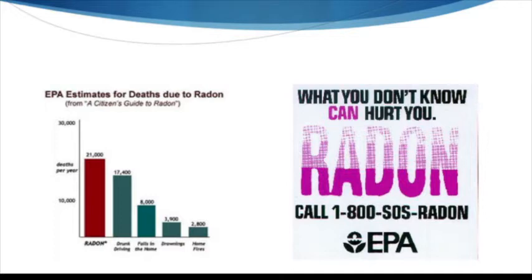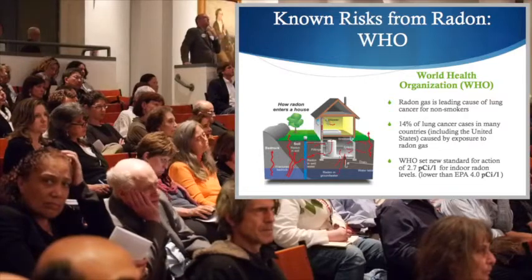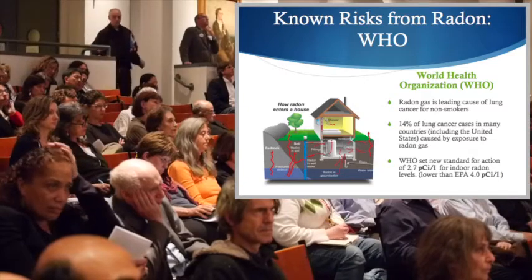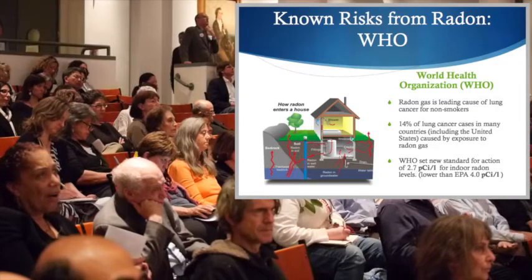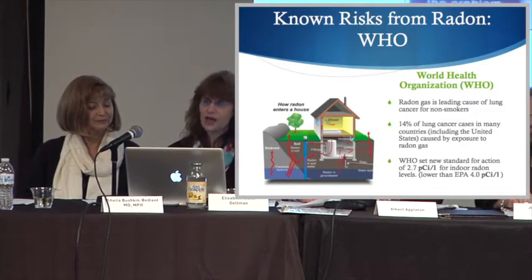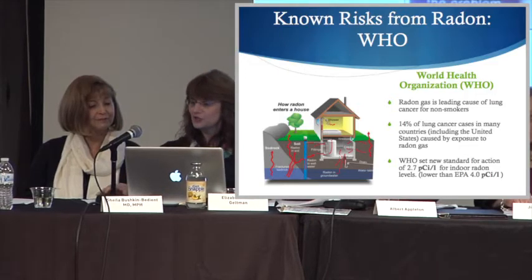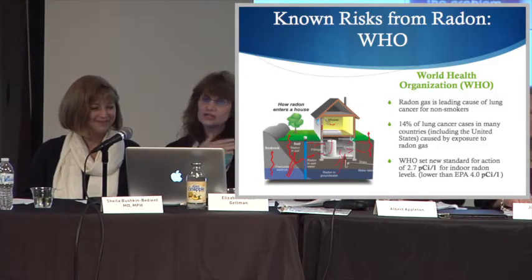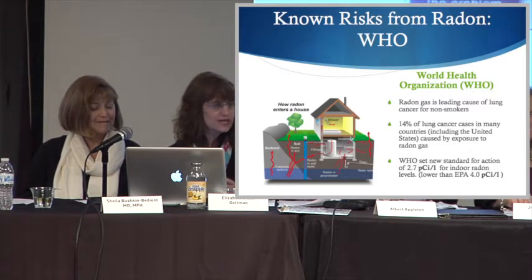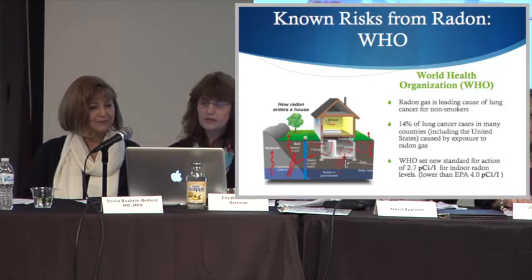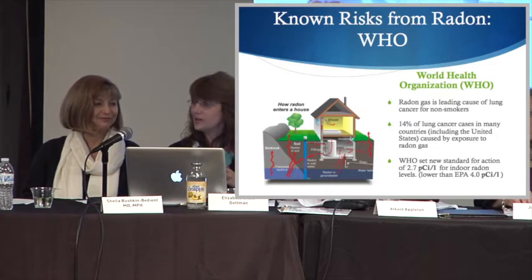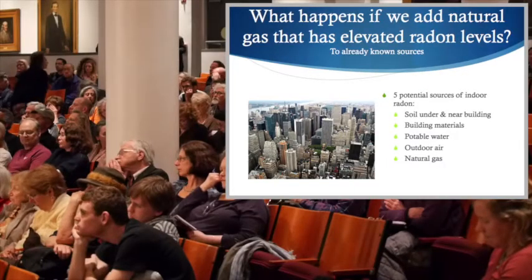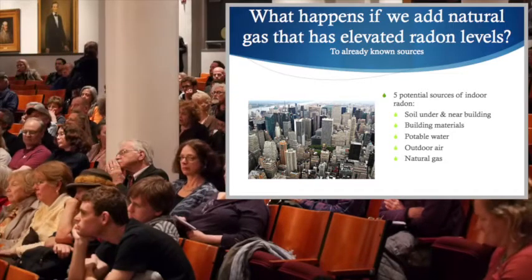EPA has identified radon as a significant health risk. The World Health Organization has actually created lower recommended levels for remediation when people find radiation in their homes. The EPA level is four picocuries per liter, while WHO has set that level at only 2.7. There is some discrepancy in the scientific community as to what is or is not safe — some say nothing is safe, and nothing is often a difficult level to remediate to. But we know that radon is a very real risk and that it causes lung cancer.